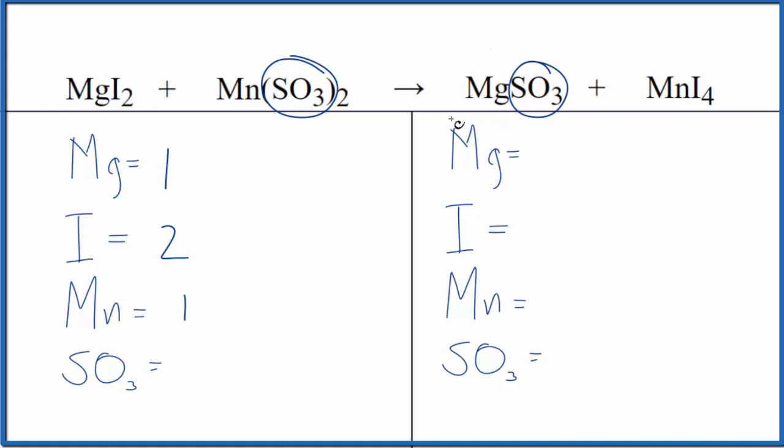So with these double displacement reactions, it's often useful just to count this as one thing if you have it on both sides. So here we have one sulfite ion times two. So we're just going to say we have two sulfite ions in the reactants.